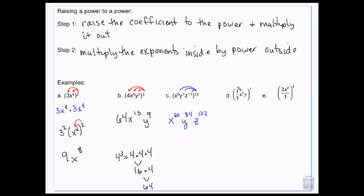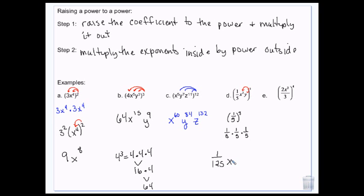And then I have the 2 and the y. 3 times 2 is 6, and since there's nothing there, it's an invisible 1. So y to the 3rd. If I have a compound, it's going to apply to all three things — the 2, the x squared, and the 3. So what I end up with is 2 to the 4th, x to the 8th, over 3 to the 4th. 2 to the 4th: 2 times 2 is 4, times 2 is 8, times 2 is 16. And four 3's: 3 times 3 is 9, times 3 is 27, times 3 is 81.